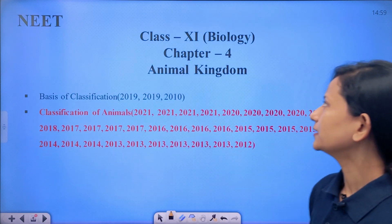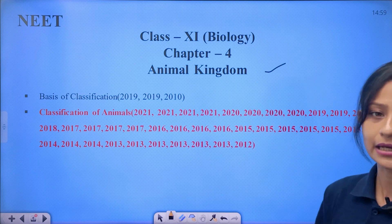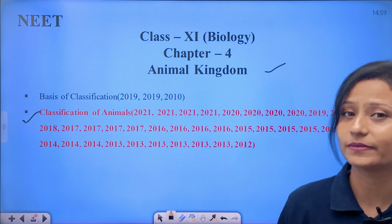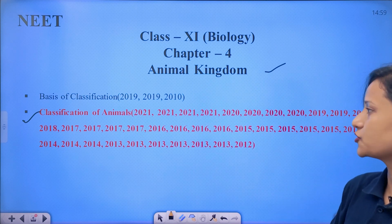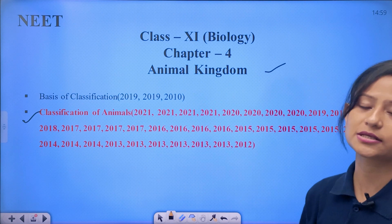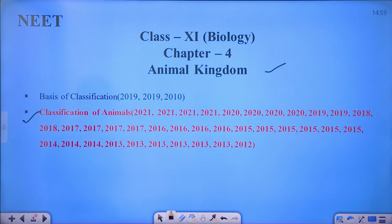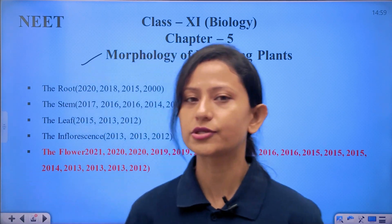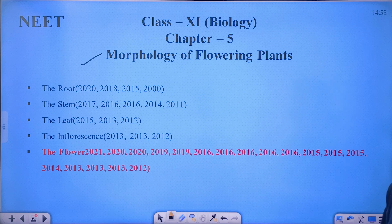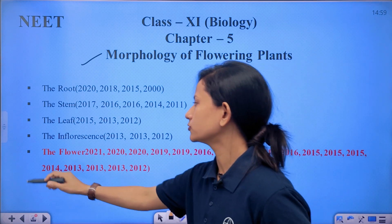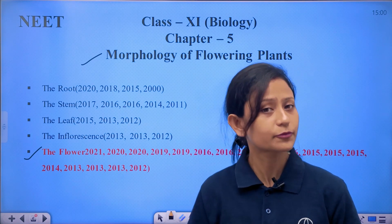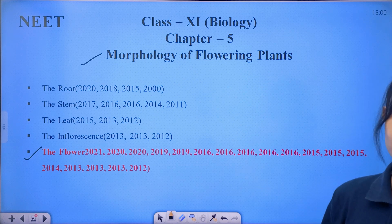Then Animal Kingdom — the second topic is the classification of animals. If you remember the classifications of animals, that topic is good technique and important. Now let's move to the next chapter, Morphology of Flowering Plants — the external features and external characteristics. The important topic here is the flower and related subtopics, which are very important from a NEET point of view.